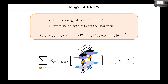We are interested in random MPS. The first thing we ask is: what is the average value of the magic, i.e., non-stabilizerness, of random MPS? And how does it scale with the bond dimension chi? In the graphical language, we have 2N copies of the sandwich between psi and psi conjugate, along with the average over the local unitaries and the sum over the four possible Pauli matrices. We are now in local dimension 2, so qubits.